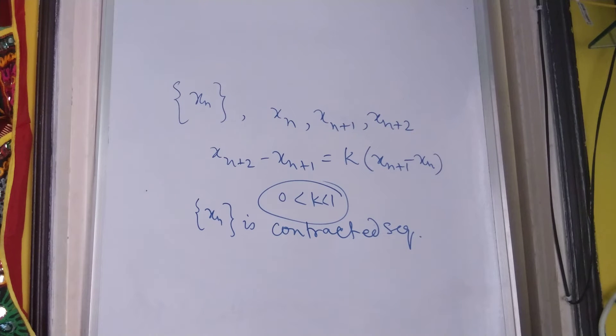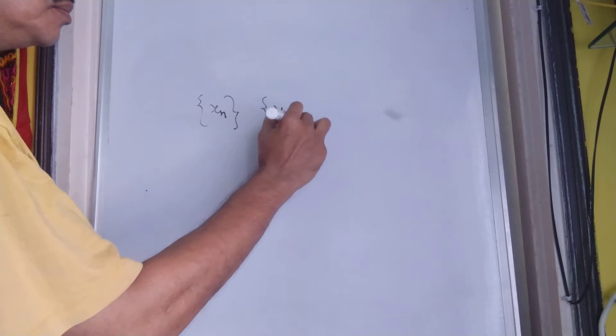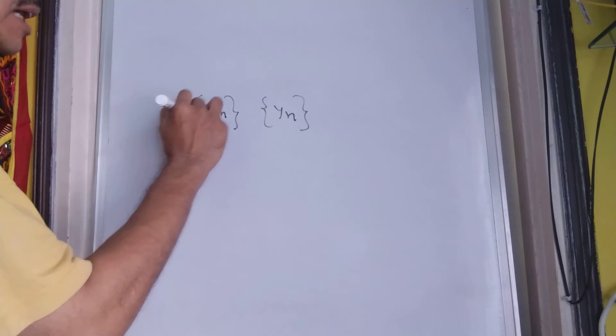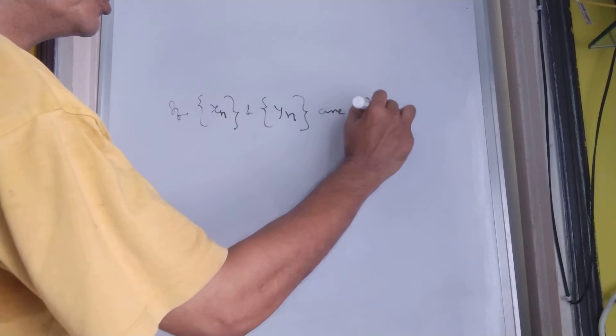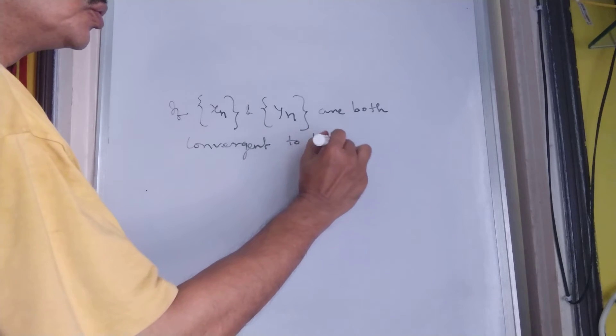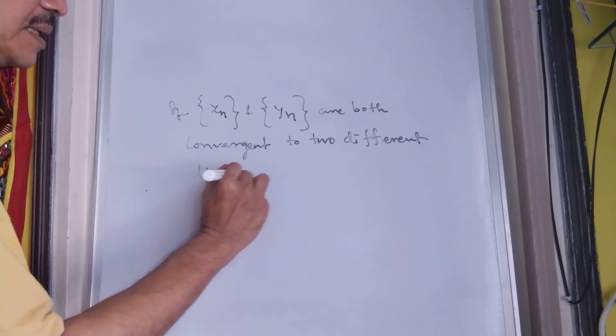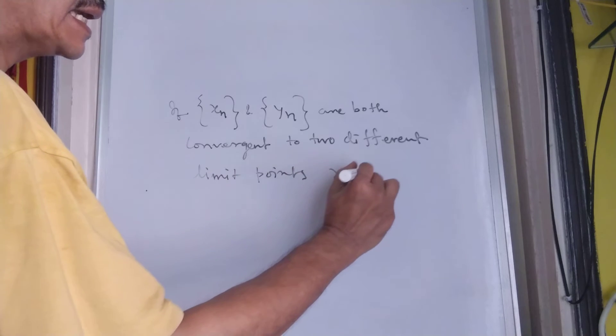Now, let us say a few words about the concept of contracted sequence which is also a Cauchy sequence. Anyway, I am not going into details of that. You can easily find it yourself. I would like to say a word about if xn and yn are both convergent to two different limit points, say x and y.